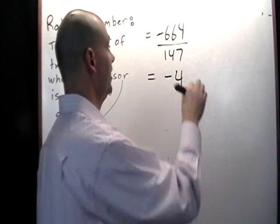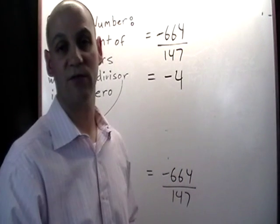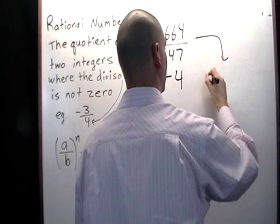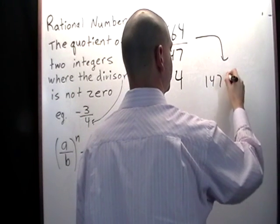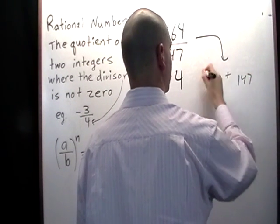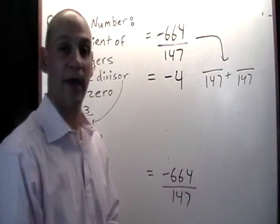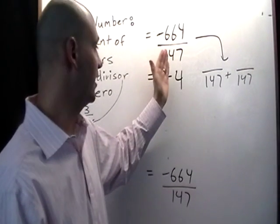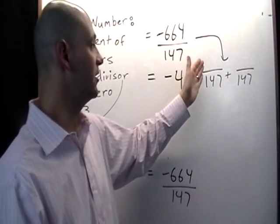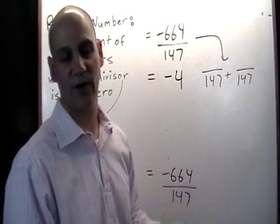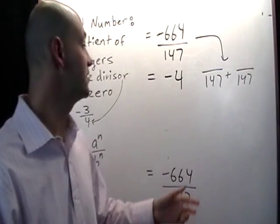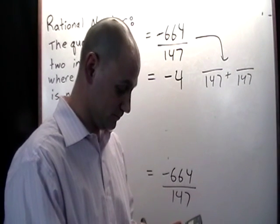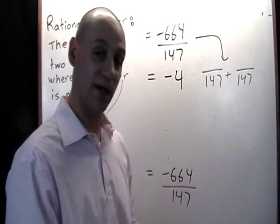And my favorite way to do that is to simply take this 664 over 147 and separate it into two different fractions over 147 and the first fraction here is going to represent the 4. We're going to just leave that negative sign out of there for a second and I want to calculate what is 4 as a fraction over 147. And the way to get that is to simply take 4 and multiply by 147 and I get 588.